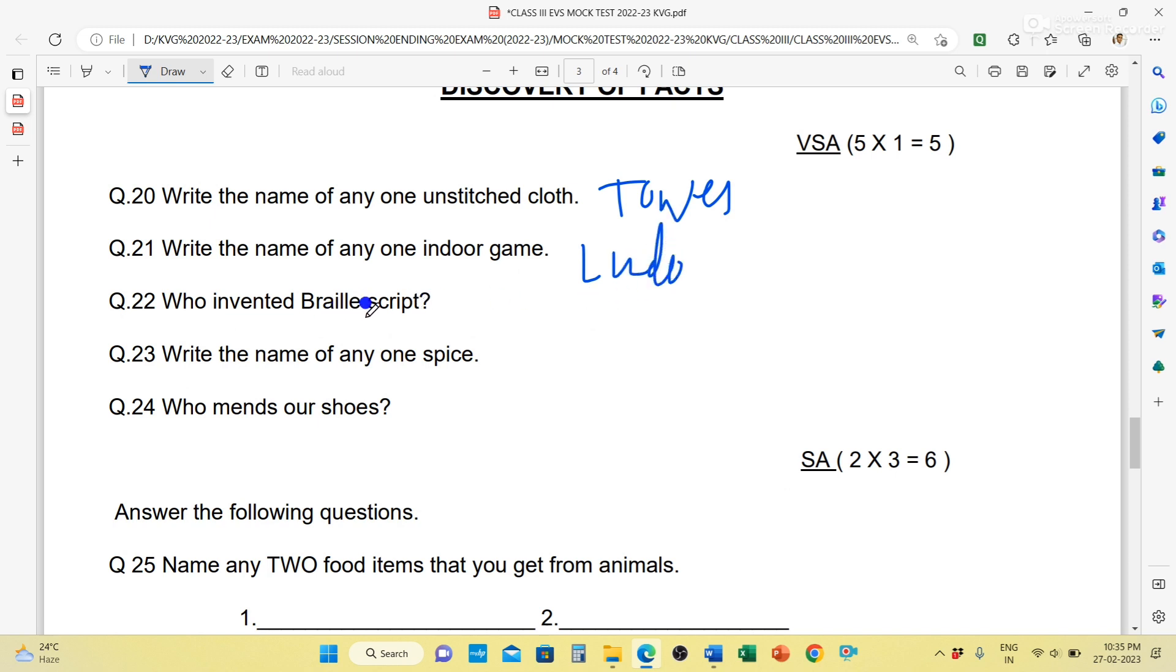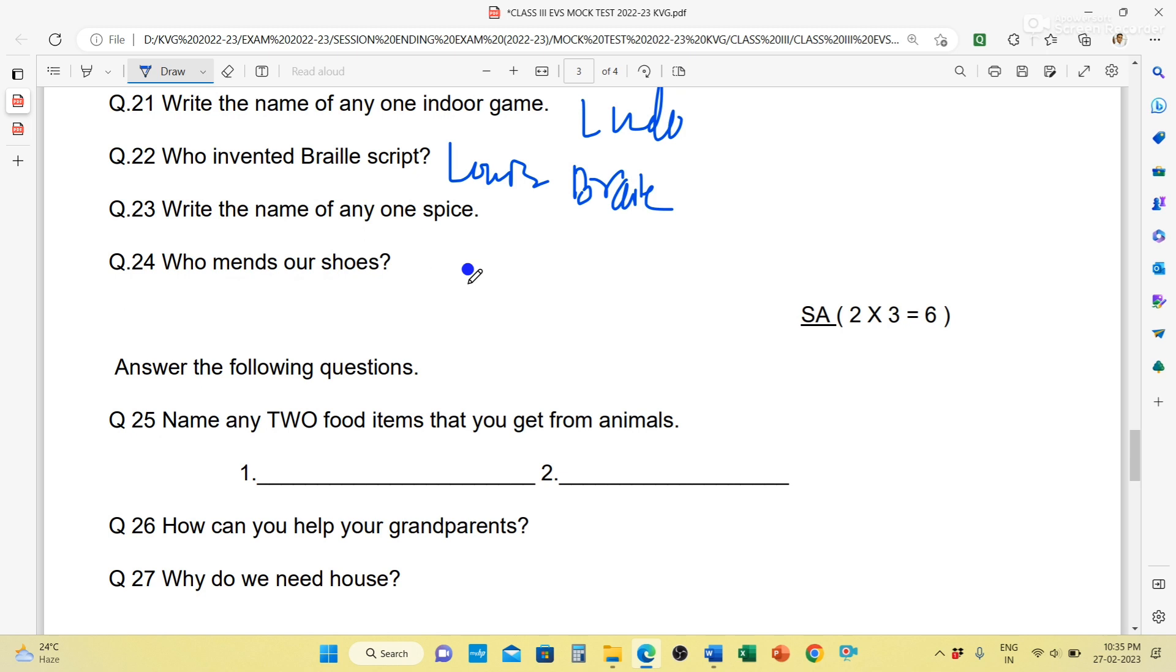Who invented Braille script? Louis Braille invented Braille script. Next, write the name of any one spice. You can write red chili powder, or turmeric, or clove, or fennel. You can write any one spice. Who mends our shoes? Those persons are called cobblers. C-O-B-B-L-E-R. Cobbler.